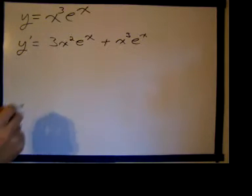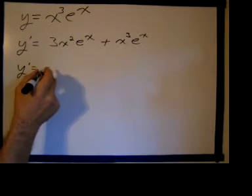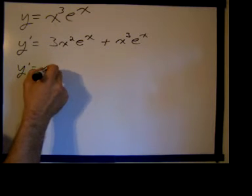If you wanted to, which wouldn't be a bad idea if you were trying to find where it was equal to 0, I could factor out x squared e to the x from both of these terms.